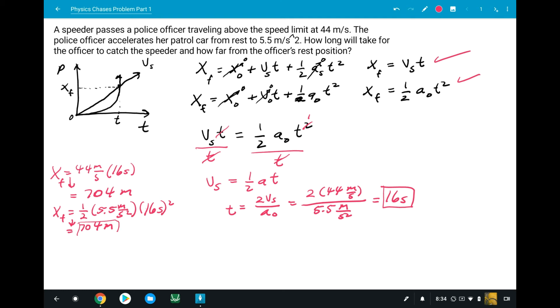So the distance that the officer will catch the speeder will be at 704 meters. The proper thing to do is to write this out. So the police officer will catch the speeder in 16 seconds at 704 meters from her rest position.